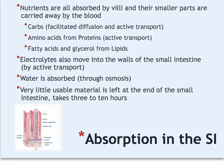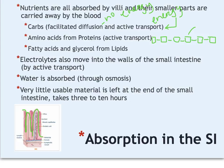Once nutrients are absorbed into the small intestine — here's a graphic of the villi, one single villus in green — those nutrients can be carried away by the blood. Carbohydrates enter through both facilitated diffusion, which takes no energy, and active transport, which does take energy. Amino acids — the small parts of proteins from those long chains — are each actively transported into the blood. Fatty acids, which are small versions of fats, get absorbed through the digestion of lipids.